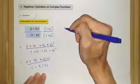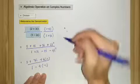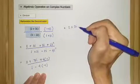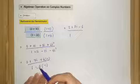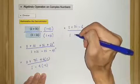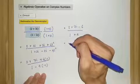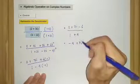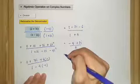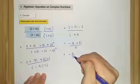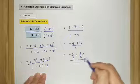Simplifying further: in the numerator we get 2 plus 7i minus 6, which is negative 4 plus 7i. The denominator becomes 1 plus 4, which is 5. So the result is negative 4 plus 7i over 5, which can be written as negative 4 over 5 plus 7 over 5 times i.